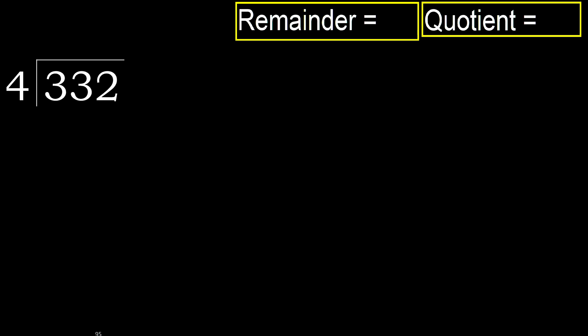332 divided by 4. 3 is less, therefore next 33. 33 is not less, therefore with 33 — 4 multiplied by which number is nearest to 33?